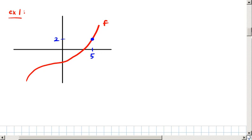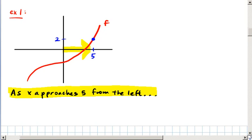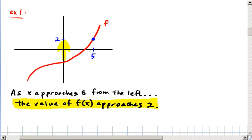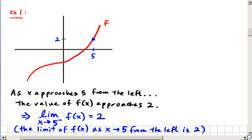You can see here I've got some random function f drawn, and you can see the blue point that I've highlighted. In other words, when x is 5, the output of the function is 2. You can see that as x approaches 5 from the left, the value of f(x) approaches 2. Therefore, we can say that the limit as x approaches 5 from the left of f(x) is 2.